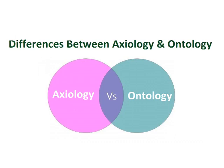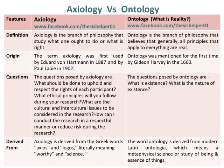Differences between axiology and ontology. Axiology is the branch of philosophy that studies what one ought to do or what is right. Whereas, ontology is the branch of philosophy that believes that generally, all principles that apply to everything are real.